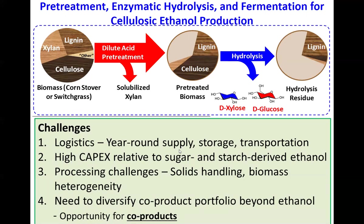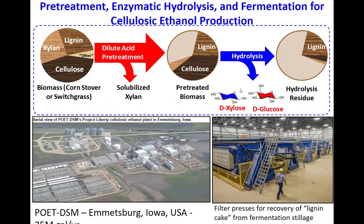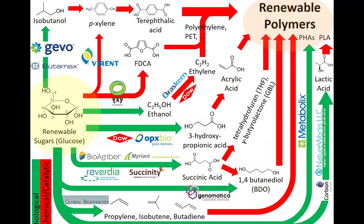Challenges to commercializing these technologies include year-round supply, storage, and transportation logistics; high capital costs — potentially an order of magnitude more capital per liter of ethanol compared to cornstarch-derived ethanol; and processing challenges. There's also a need to diversify the co-product portfolio beyond ethanol. Currently this plant only makes ethanol and burns the lignin residue, but there are many other co-products possible.